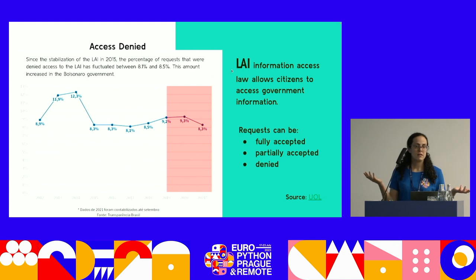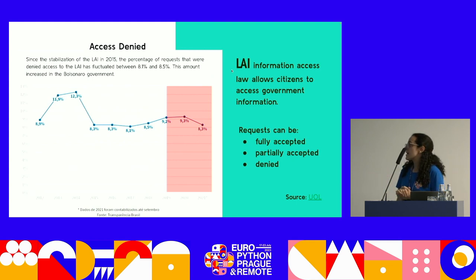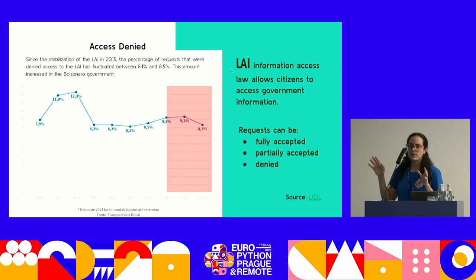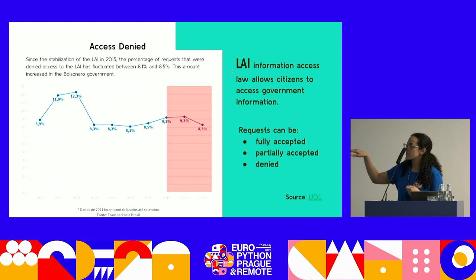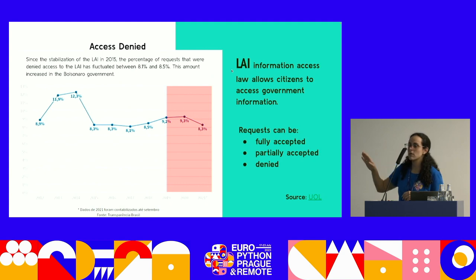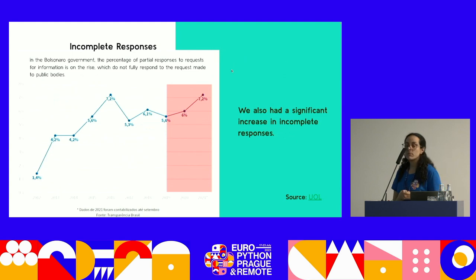I think most countries have this problem of how we can access information — information we have a right to. Brazil created a law called the Information Access Law, or LAI. It was created in 2012. After its creation, many times when you requested information, it was denied. After a while we went to a plateau — around 8.3, 8.1 percent of denied information. But when the former government, Bolsonaro, entered the presidency, we saw that the denial of information was increasing — not only outright denial, but incomplete responses too.